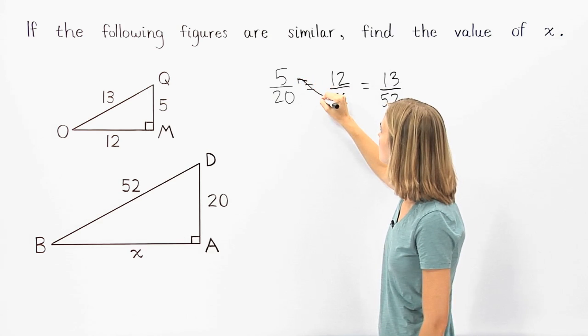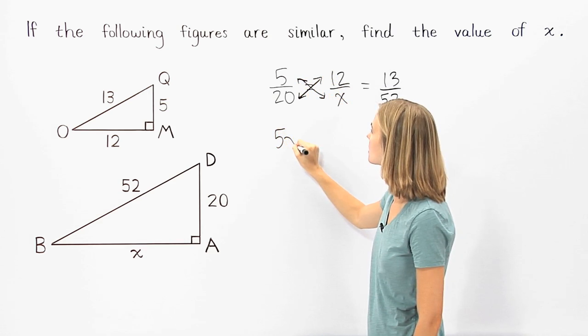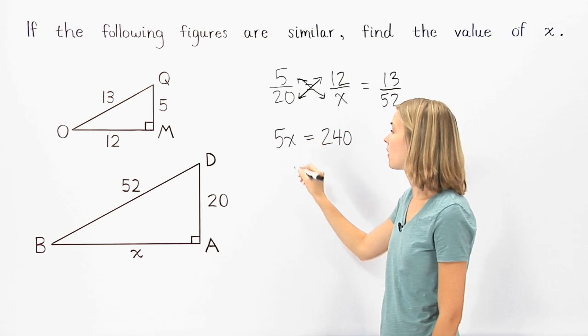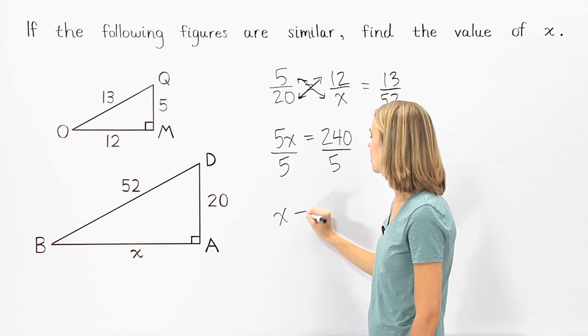5 times x equals 20 times 12, or 5x equals 240. Finally, we divide both sides of the equation by 5 to get x equals 48.